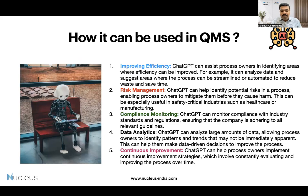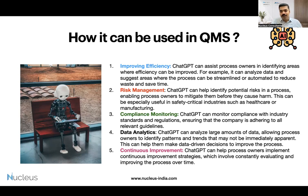Some of the key bullet points I have listed here were even generated by ChatGPT itself. It says you can use ChatGPT to improve efficiency. As process owners, you can identify which areas you want to improve. Whatever KPA data we have in our organization, if you feed those data into ChatGPT, it can analyze and suggest areas where we need to focus, where we can reduce waste and save time.